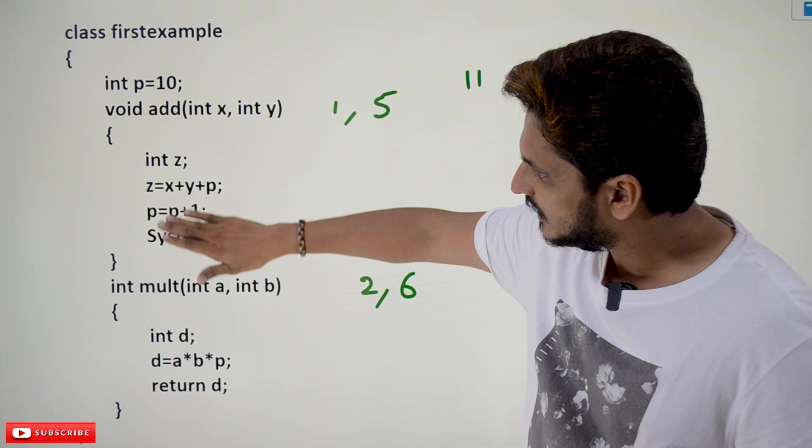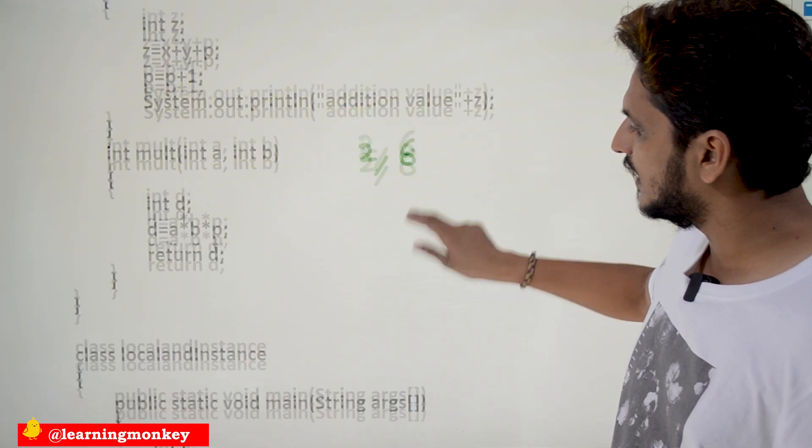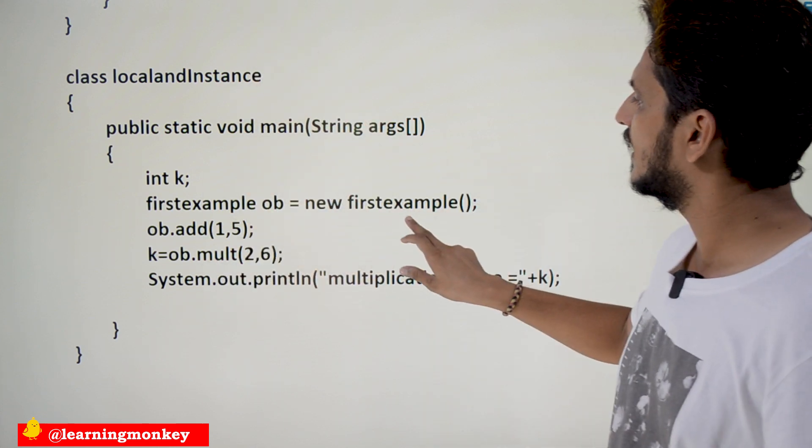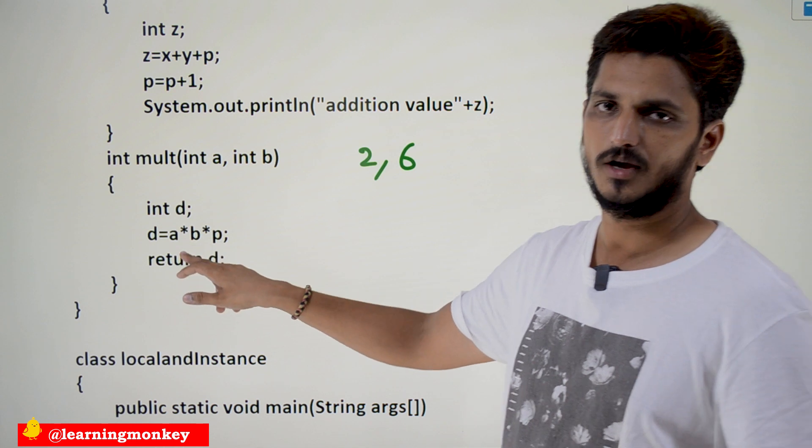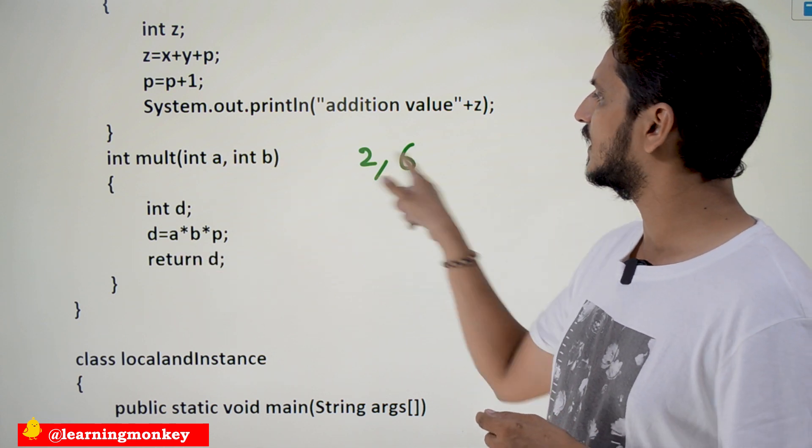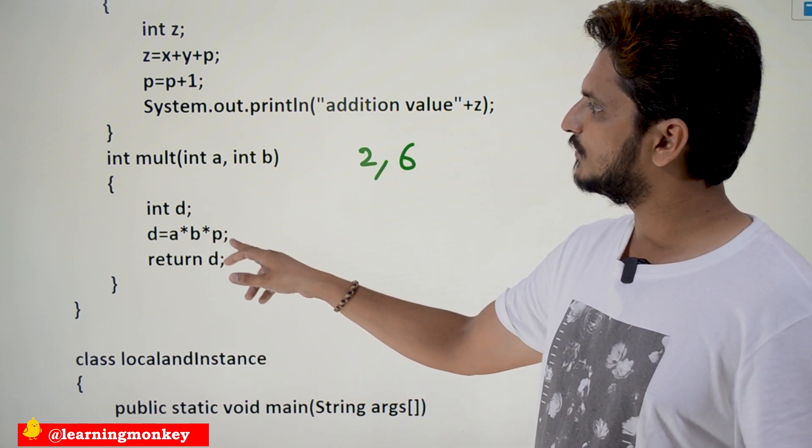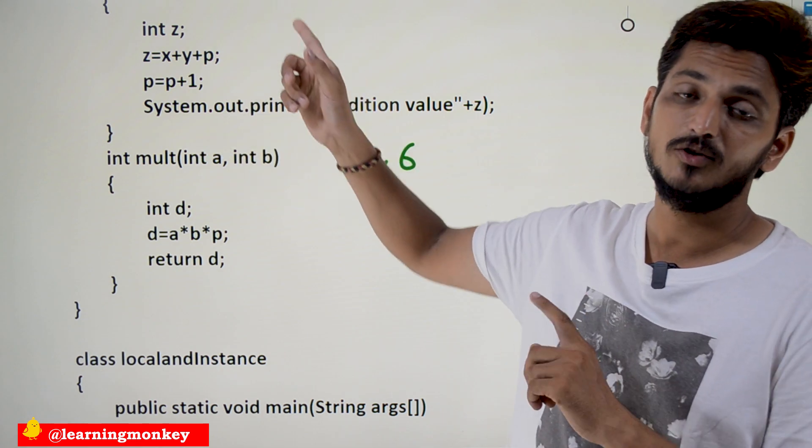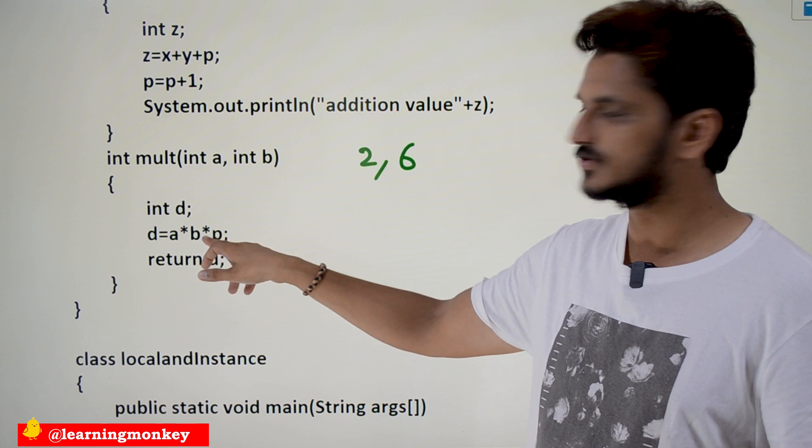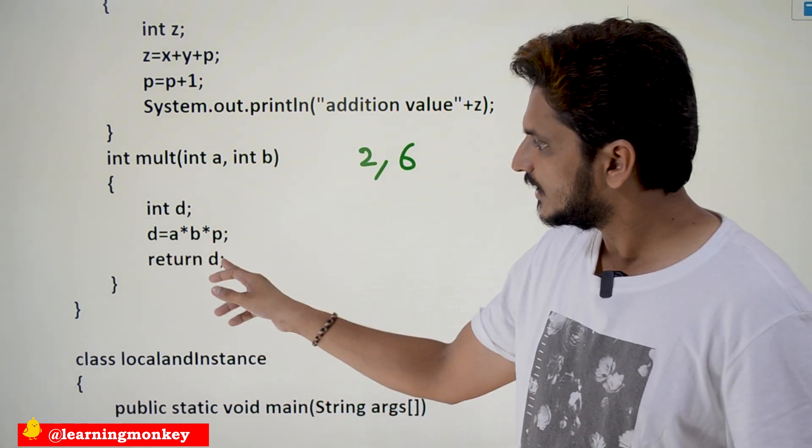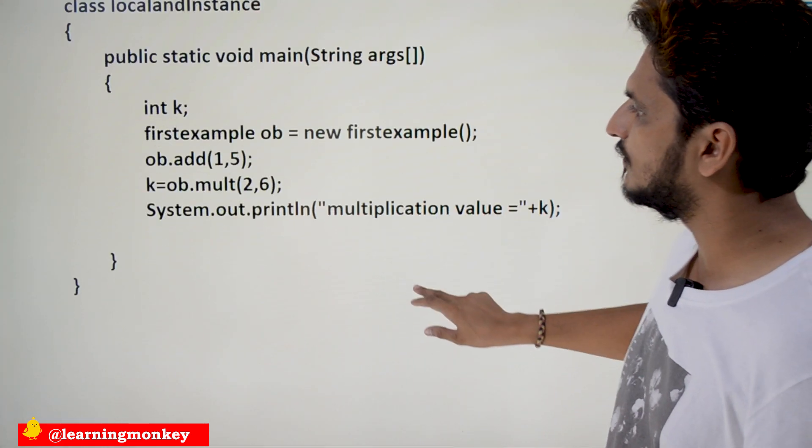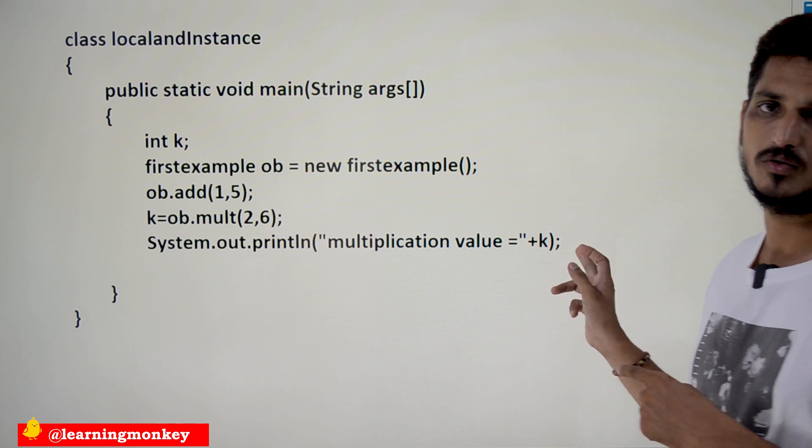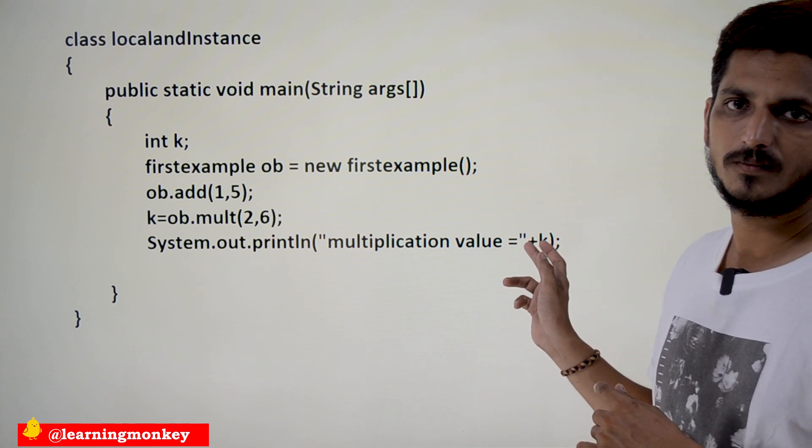Now onwards, after completion of this add method, execution moved to the main method and keeps on continuing in the next line. What is the next line? It is calling the multiplication method. We are going to call this method and we are going to execute this code. We are sending the values 2, 6. a contains 2, b contains 6. d is equal to 2 multiplied by 6 multiplied by, what is the p value now? p is equal to 11 now. Because previously, this method modified the p value to 11. So, 2, 6, 12, 12, 11, 132. It is going to return the d value, means 132 is returning back, that 132 is coming here and placed it in a variable called k. Now, we are going to display multiplication value is equal to 132, k value. What is present in the k? 132.